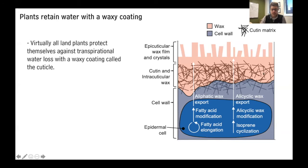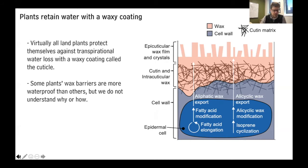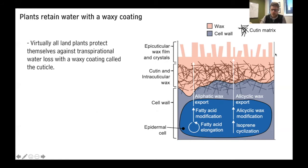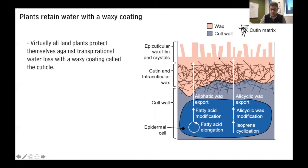There are really two different components. One is shown here in pink and the other is in black. The black is a polyester matrix called cutin — it's the scaffold on top of which and within which these wax molecules accumulate. The wax accumulates both on top of the cutin matrix and inside of it, and it's the wax that seals the surface against water loss.